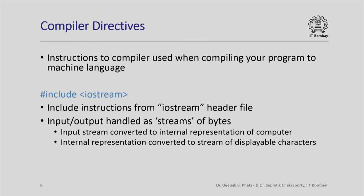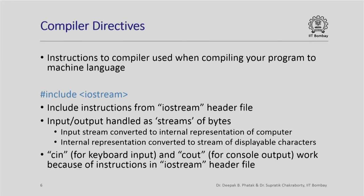Why are we asking the compiler to include instructions from iostream? Input and output in C++ programs are handled as streams of bytes. When you type from the keyboard, the program sees it as an input stream of bytes that must be converted to the computer's internal representation. Similarly, when printing a result, the internal representation must be converted to a stream of displayable characters. Special entities called cin and cout handle this. They work based on instructions in the iostream header file, so unless we include iostream, we cannot use cin and cout for input and output.